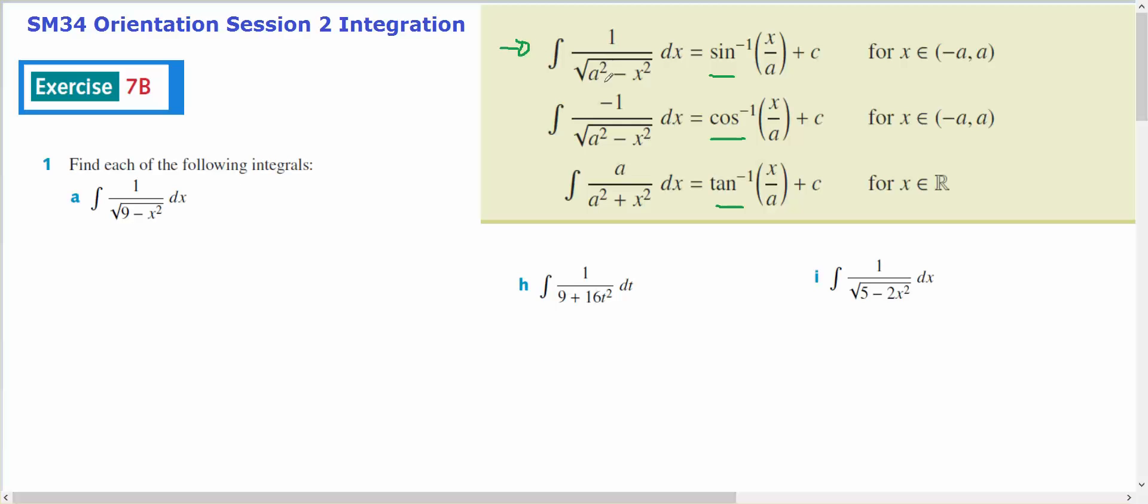9 will be 3 squared, so this is the same as the integral of 1 on top of the square root of 3 squared minus x squared dx, which is going to be this rule here, so it's going to equal the inverse sine of x on 3 plus some constant c. It says the following integrals, therefore I need the general rule, so I need to add c.